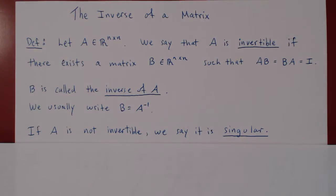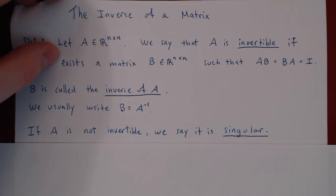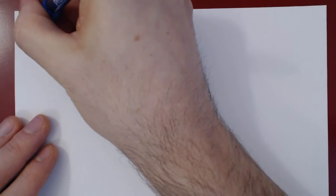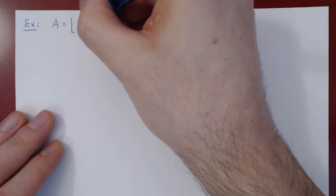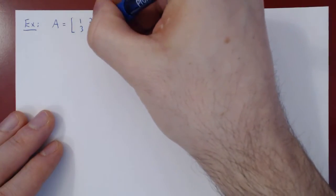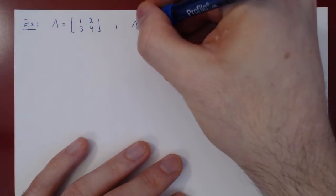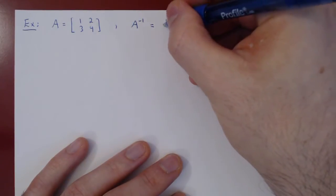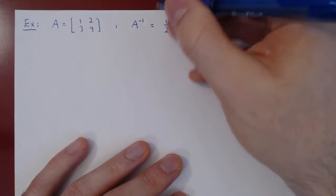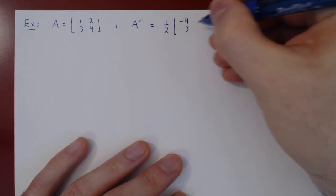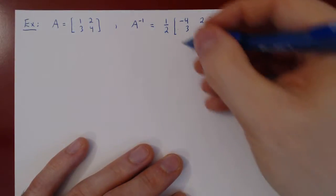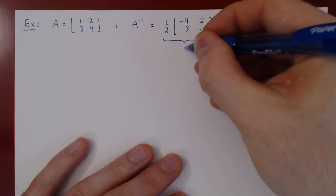Let's consider an example of what an inverse may be in the case of 2 by 2 matrices. Suppose we take the matrix A = [1, 2; 3, 4]. I claim the inverse of this matrix, A inverse, equals one half times the matrix [-4, 2; 3, -1]. This is our matrix B that we claim is the inverse of A.